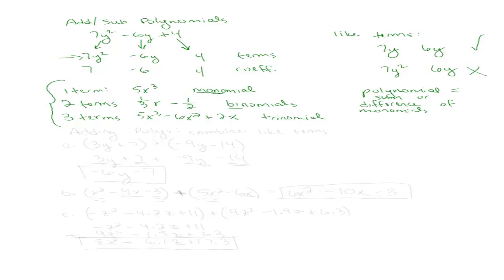So we're clear on what a polynomial is and how we define the different types. Now say I have two polynomials and I want to add them. When we're adding polynomials, all we're going to do is combine like terms. So let me drop my parentheses and just combine like terms.